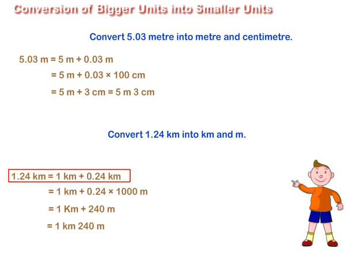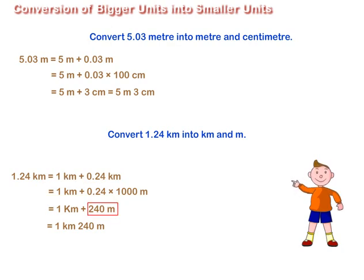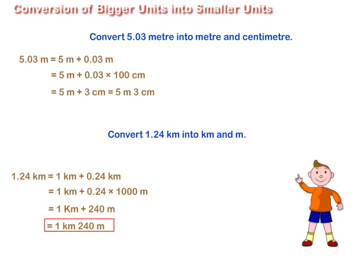To convert 1.24 km into kilometers and meters, we write 1.24 km is equal to 1 km plus 0.24 km. We convert 0.24 km into meters by multiplying it by 1000 and get 240 m. We then add 1 km plus 240 m and get 1 km 240 m.